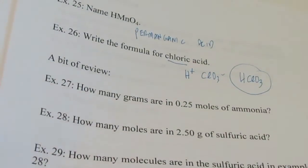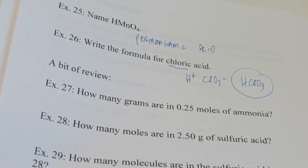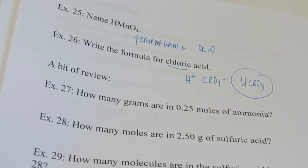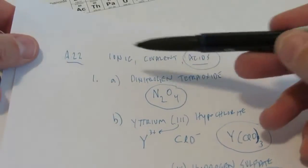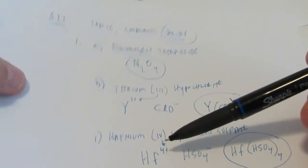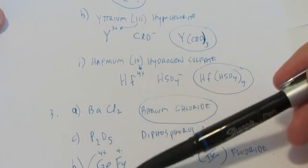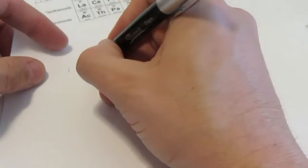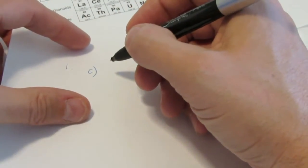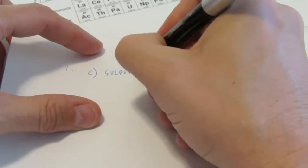Now we're going to go back and do a little bit of our homework. In assignment 22, we previously did number 1 A, B, and I, and number 3 A, C, and H. Let's do number 1, letter C — it wants the formula for sulfurous acid.